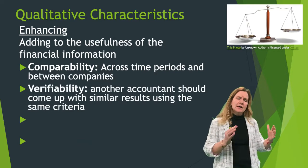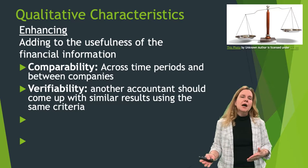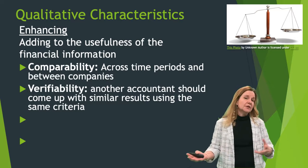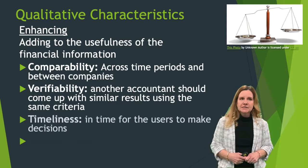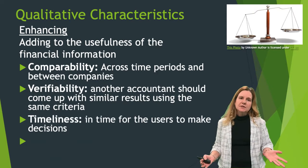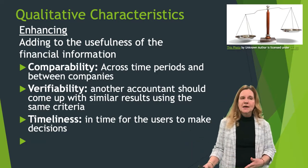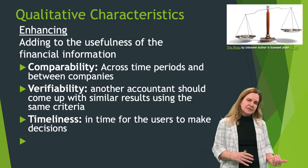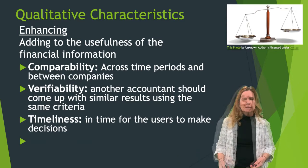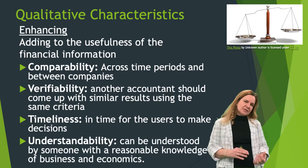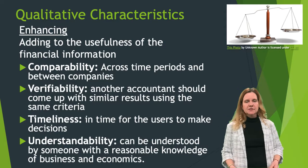Verifiability means that if another accountant were to look at the same data, they would come up with a similar conclusion. For example, if they were applying FIFO — first-in, first-out — to inventory, they would come up with the same inventory amount on the financial statements. Timeliness: financial reports have to be distributed timely, which is why publicly traded companies have quarterly filing requirements. The faster information reaches investors and creditors, the faster they can make decisions. Finally, understandability: someone with a reasonable knowledge of business and economics who is willing to do some research should be able to understand the financial statements and disclosures.